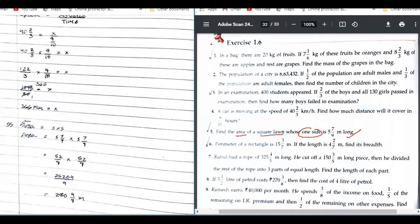So see, don't just write area. First of all, write the information which is given - side of a square lawn equals to 5 7/9 meters. You should write that. Secondly, area - area of what? You should write the full statement.